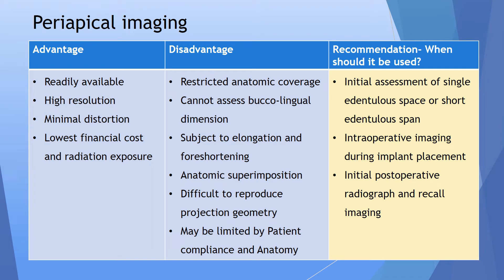Let's look at each of these imaging modalities and their advantages, disadvantages, as well as when they are recommended to be used. Let's start with periapical imaging. The advantage of periapical imaging is that it is readily available, has high resolution, minimal distortion, and lowest financial cost and radiation exposure. When you actually take a good radiograph, paying attention to the angulations, there is very little distortion expected and most of the time the radiograph is a true copy size of the actual tooth size.